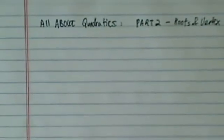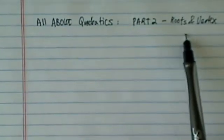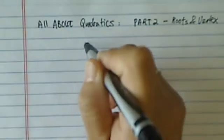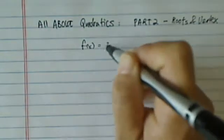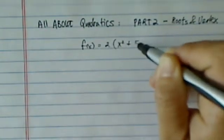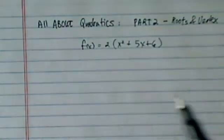In this clip of part two, we're going to talk about the roots and how it's connected to vertex. So let's get back to our function, which is two times this whole thing x squared plus five x plus six.